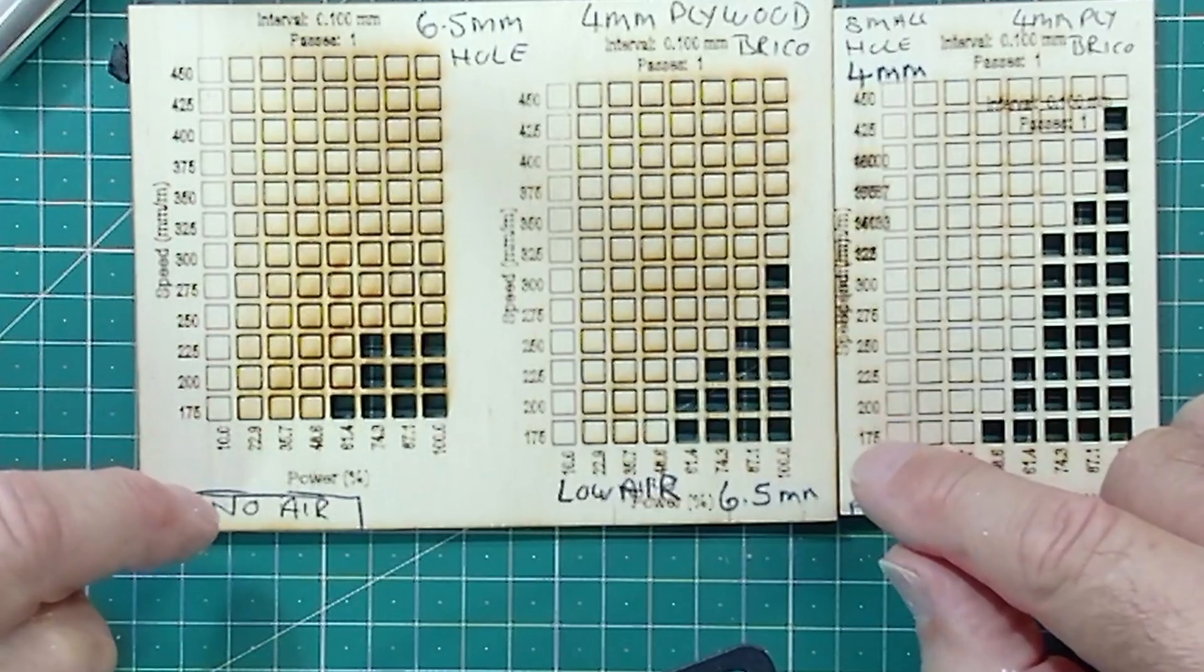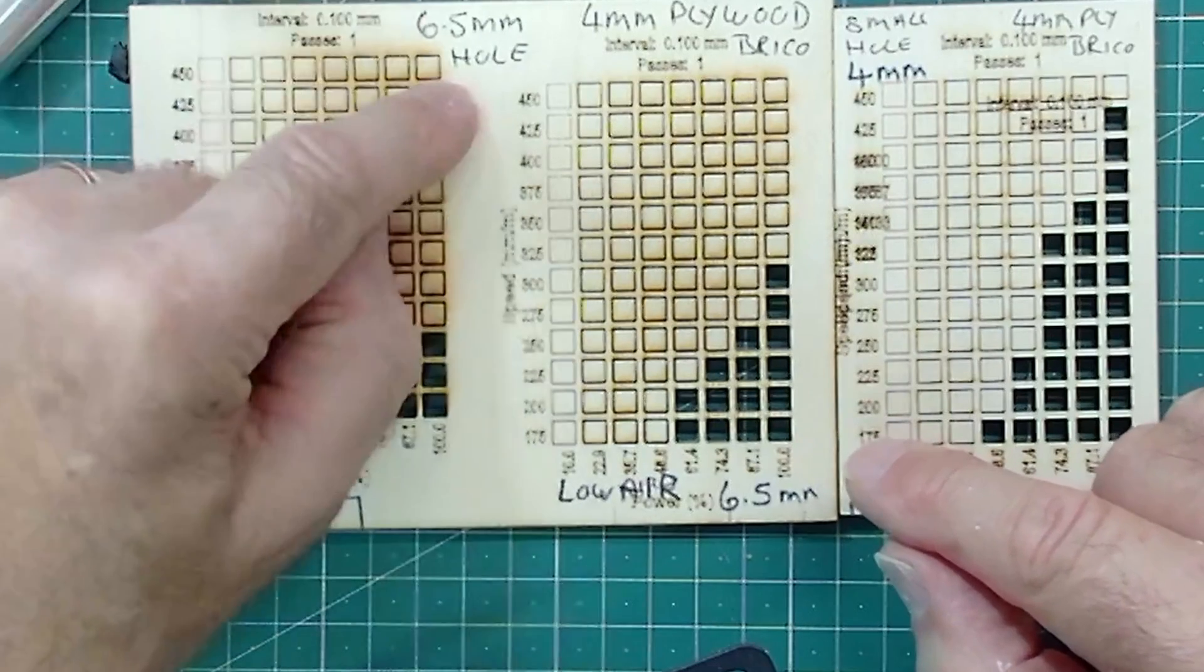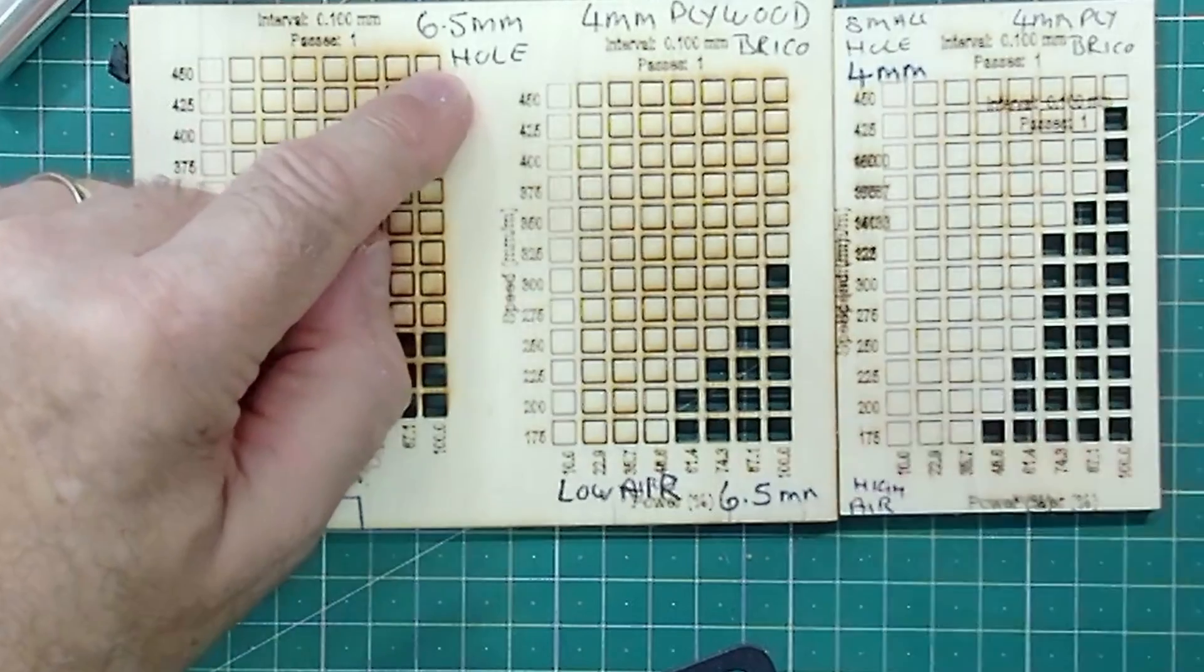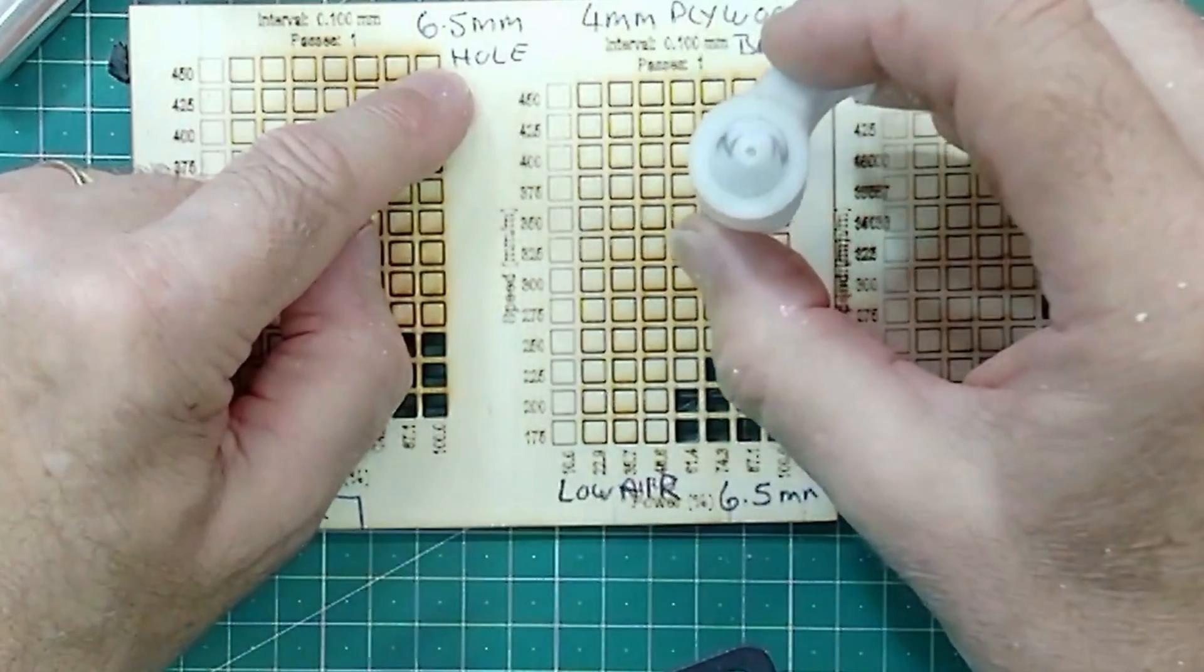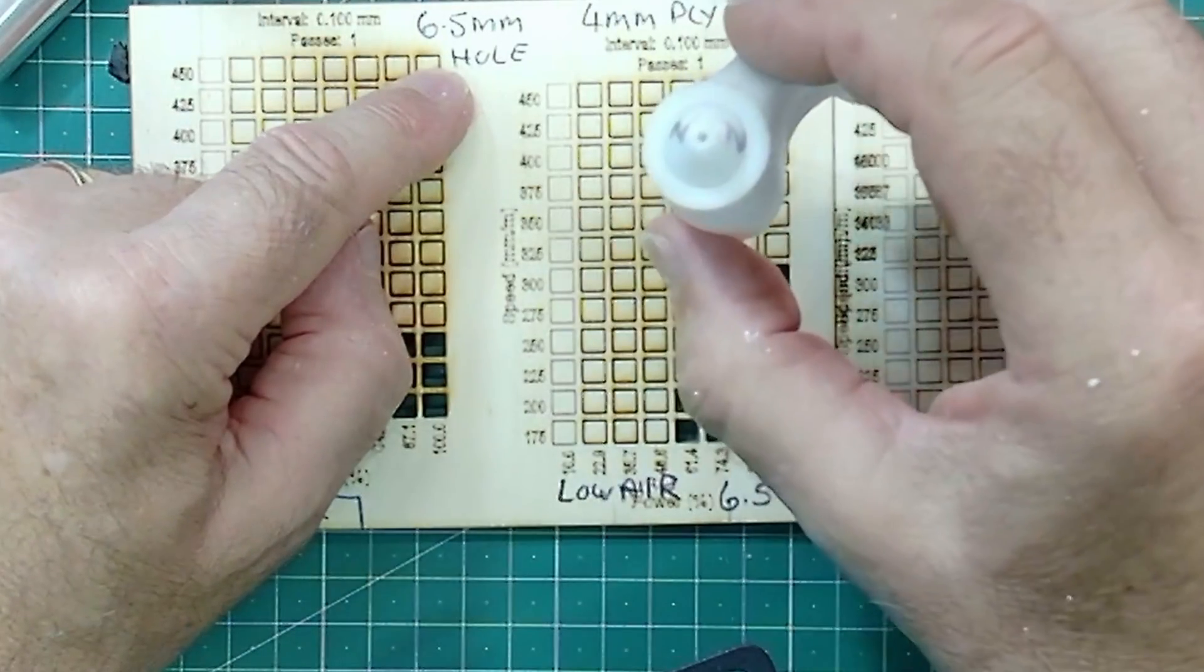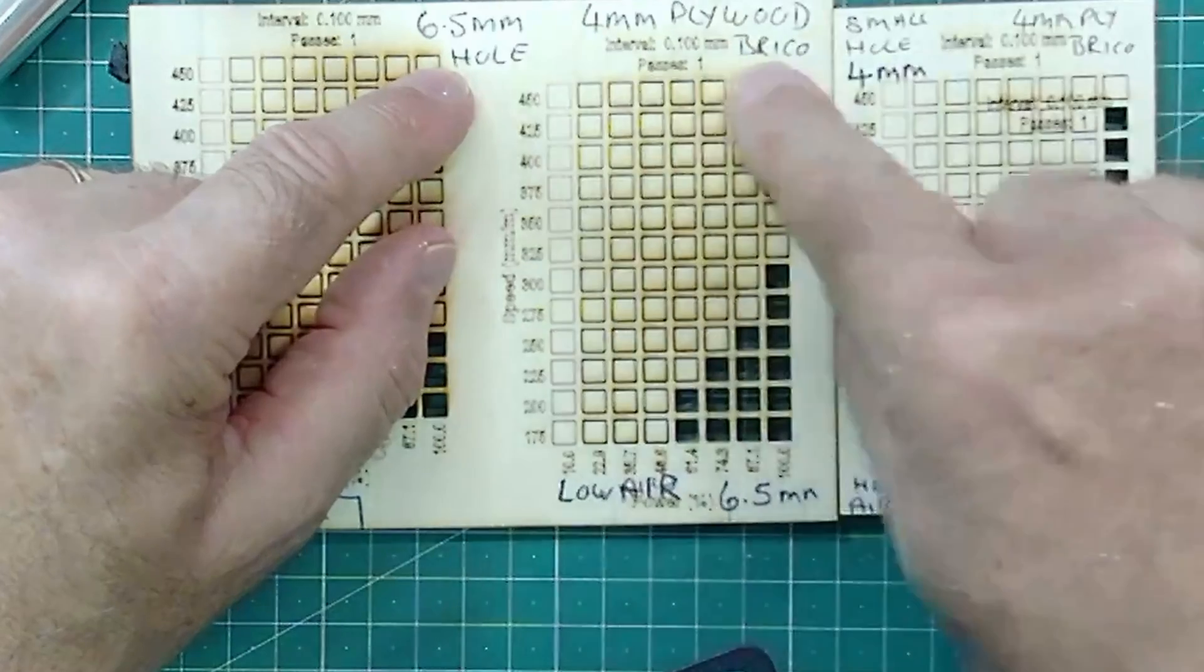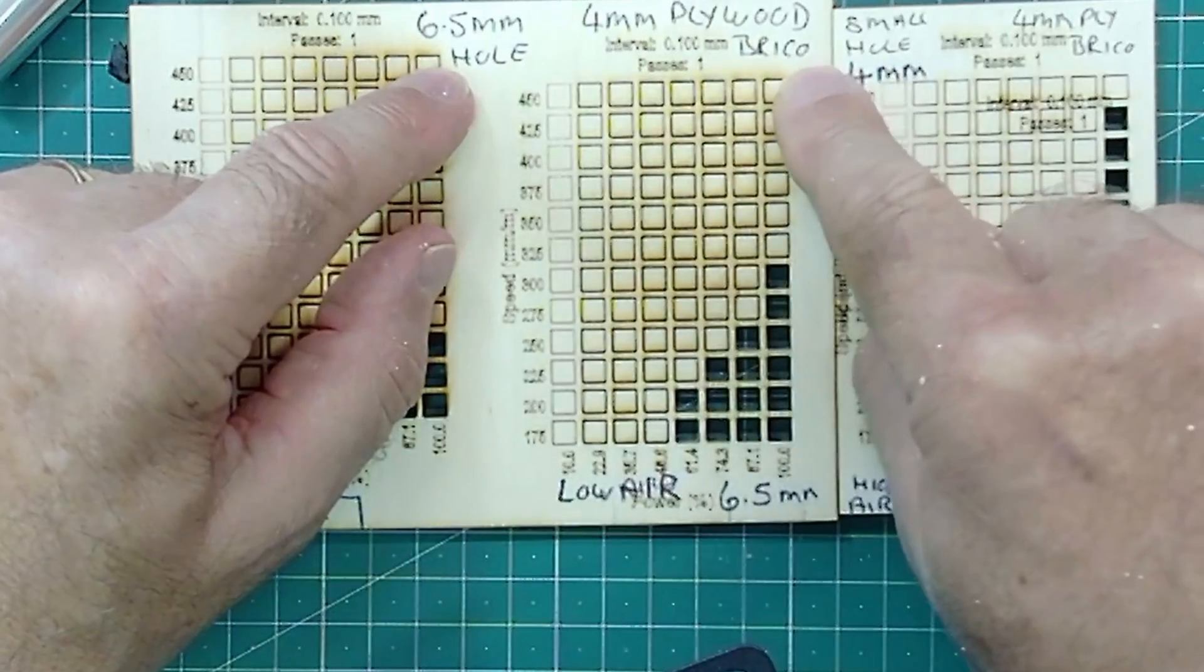This had a 6.5mm hole. I've yet to really do more testing on this. As you can see, this is 4mm ply from my local shop.